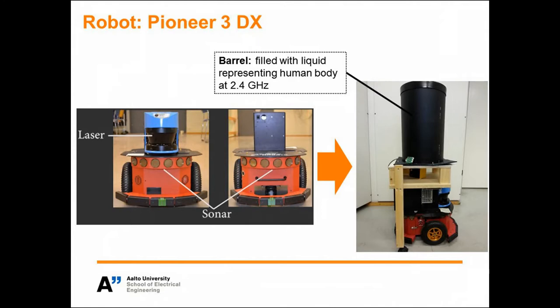For our experiment, we use a small lightweight robot called Pioneer 3DX, which is ideal for indoor use. The Pioneer 3DX platform has ability to localize using sonar, laser, and onboard inertial sensors.